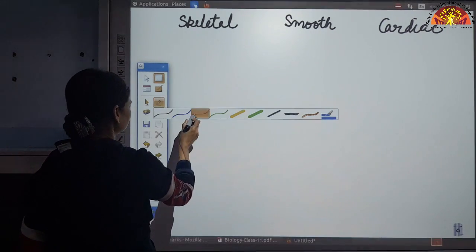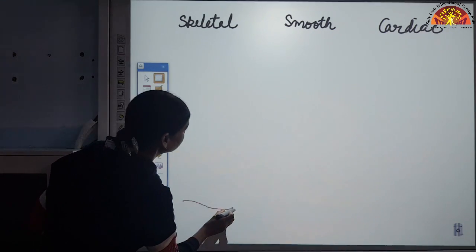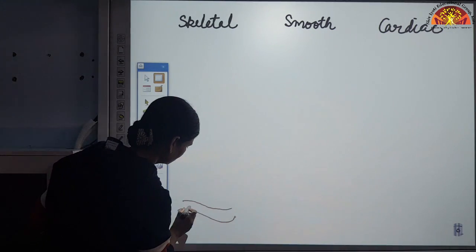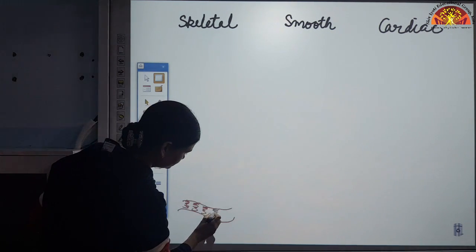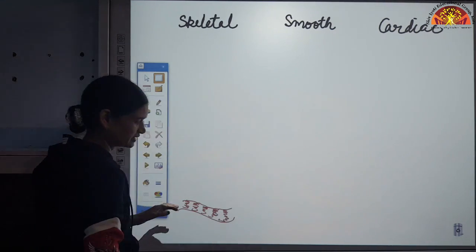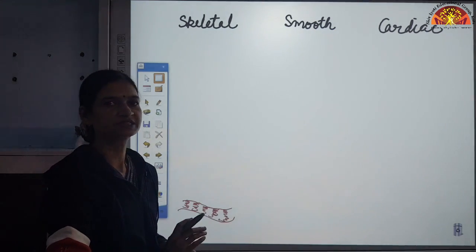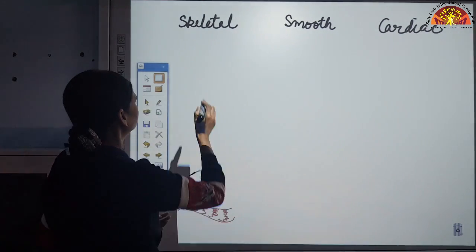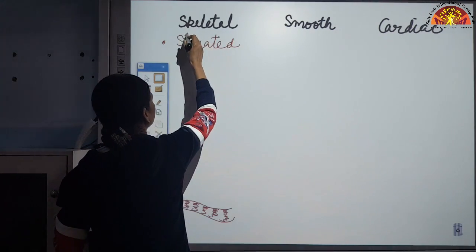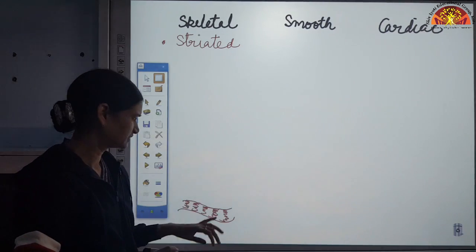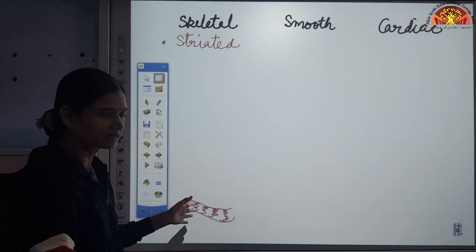When we talk about skeletal muscles, you may have seen their structure in previous classes — they have light and dark bands. These light and dark bands form striations, so these muscles are also known as striated muscles, because of the presence of these striations.